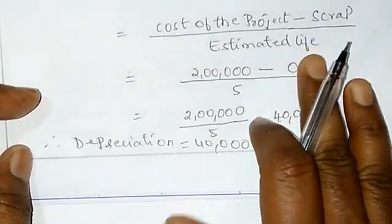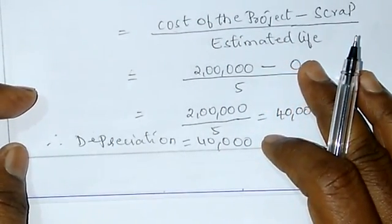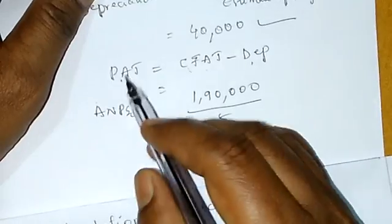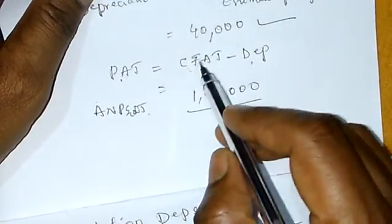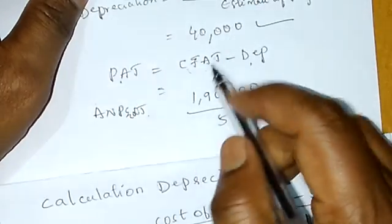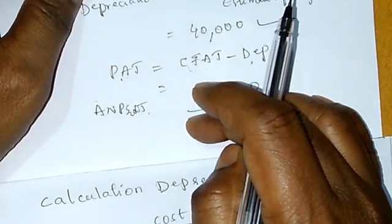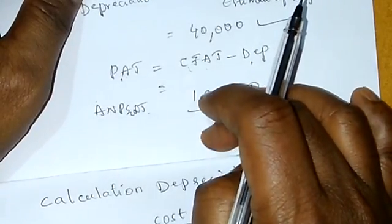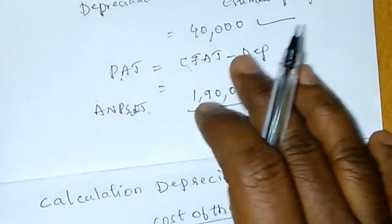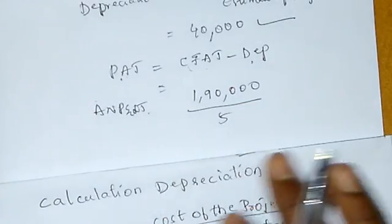Manamu depreciation find out chayasamu — 40,000. Next, tax find out chayasamu. Profit after tax is equal to CFT minus depreciation. CFT is profit before depreciation and tax. So from that amount, depreciation minus chayasamu — manakki PAT (profit after tax) raadam jarukthi undi.